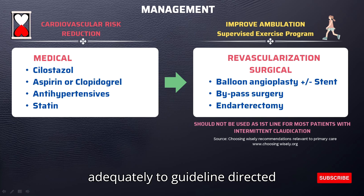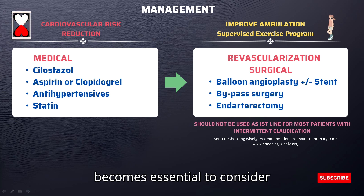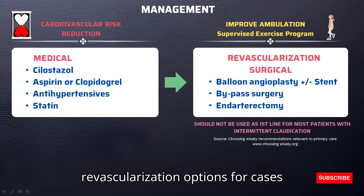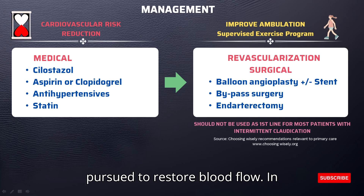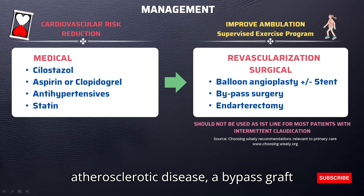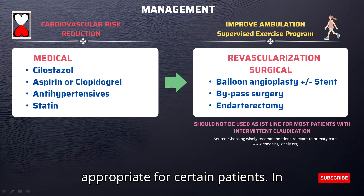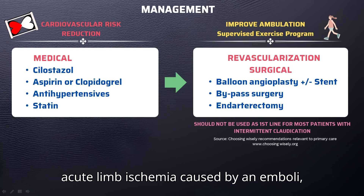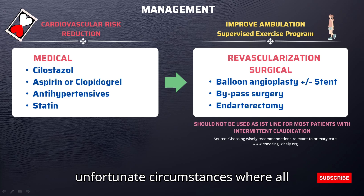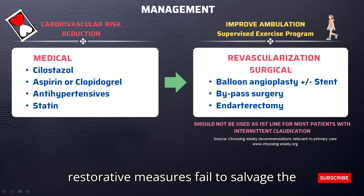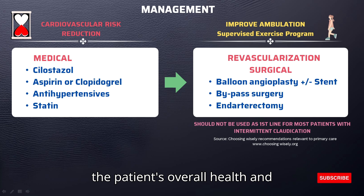When patients do not respond adequately to guideline-directed conservative therapies including exercise and lifestyle modifications, it becomes essential to consider revascularization options. For cases involving a single arterial segment, angioplasty with or without stent may be performed to restore blood flow. In instances of more extensive atherosclerotic disease, bypass graft surgery can offer a viable solution, while endarterectomy may also be appropriate for certain patients. In acute limb ischemia caused by an embolus, embolectomy is recognized as a standard treatment. In unfortunate circumstances where all restorative measures fail, amputation may regrettably be a necessary option for the patient's overall health and well-being.